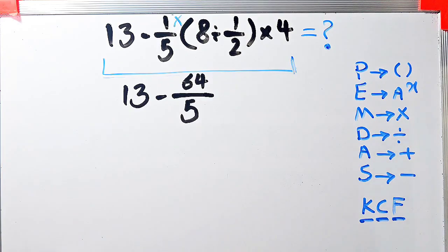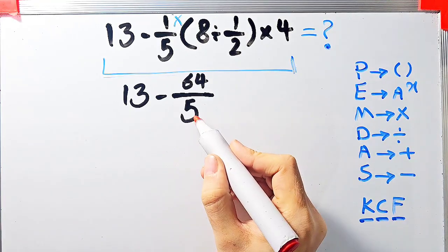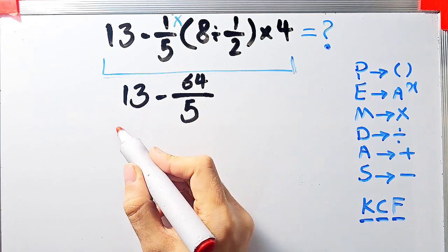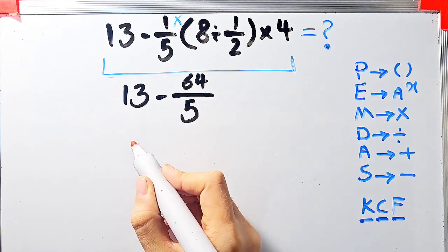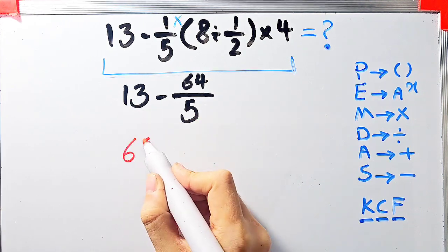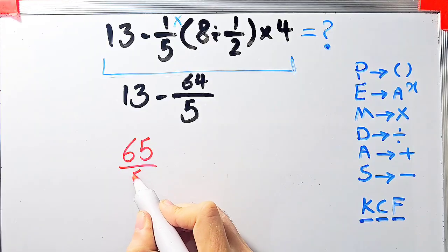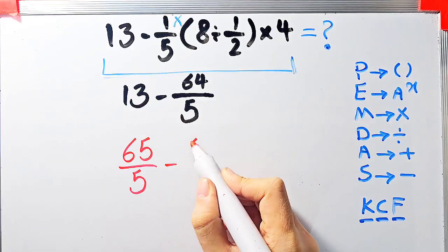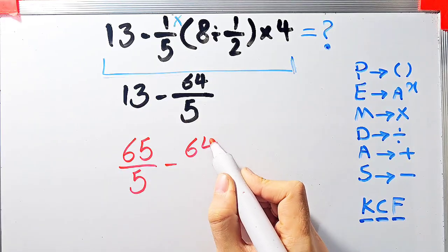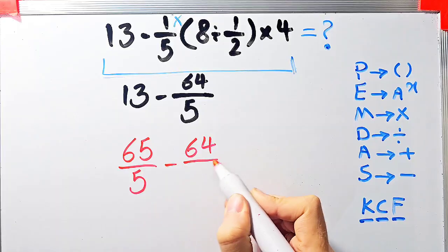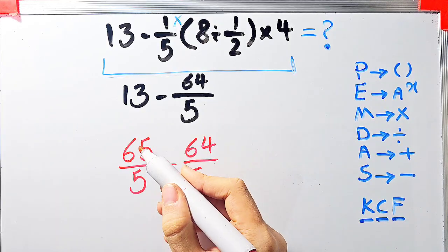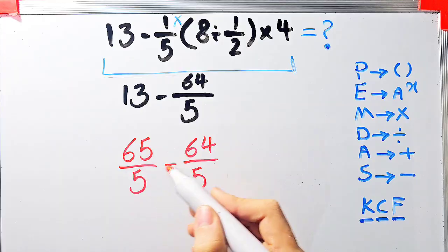Since the denominator of this fraction is 5, we can write 13 as 65 over 5. Now we have 65 over 5 minus 64 over 5, which equals 1 over 5. The final answer of this question is 1 over 5.